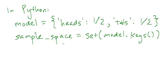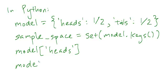If you want to figure out what the probability assigned, you can just look at what the dictionary evaluated at each of the keys are. For example, model of heads stores one-half and model of tails also stores one-half.